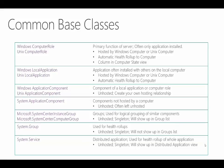Finally, we have system service, which represents a distributed application. When you create a new distributed application in the operations console using the distributed app designer, it's actually creating a new class based on system service. We use this to represent an overall application — for example, an Exchange environment where all the Exchange servers and other components roll up into one overall health state. Like the others, it's unhosted and singleton, and anything based on it will show up in the distributed application view. We really need to understand more about relationships to understand the full implications, and that's something we'll get into in the next lesson on relationships.